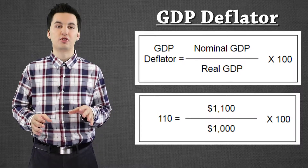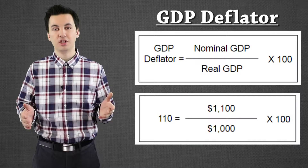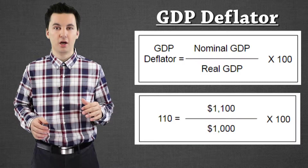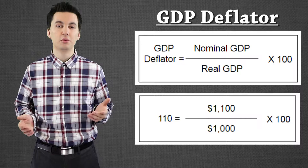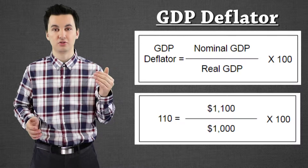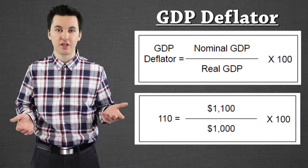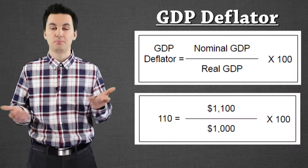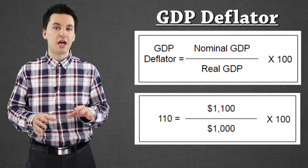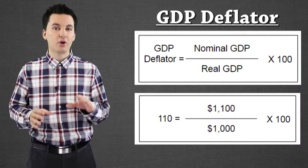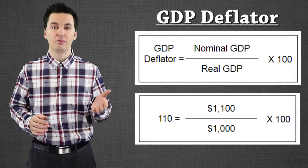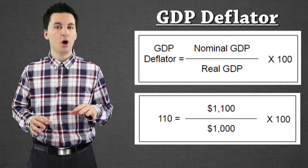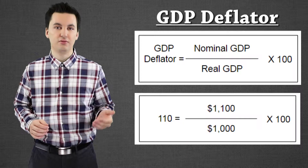Also note that if we're looking at the base year, our GDP deflator is going to be 100. The base year will always be 100 because what we would be dividing is nominal GDP by real GDP, which would be the same number — so we would get one, then times it by 100 equals 100. Whenever our GDP deflator is above 100, we've had inflation. If it's ever below 100, we've actually had deflation.